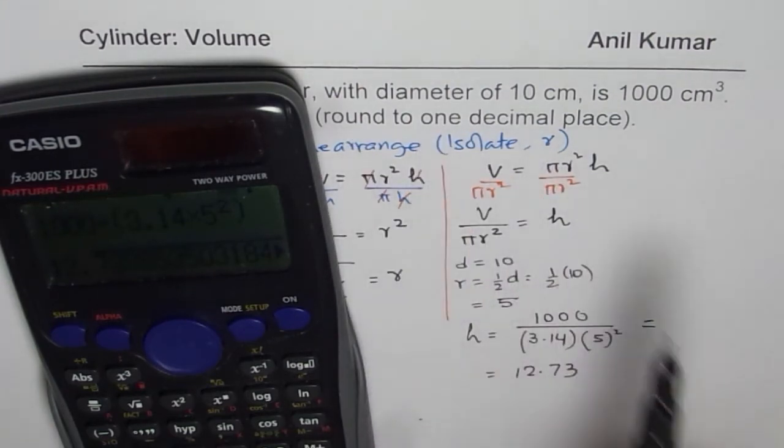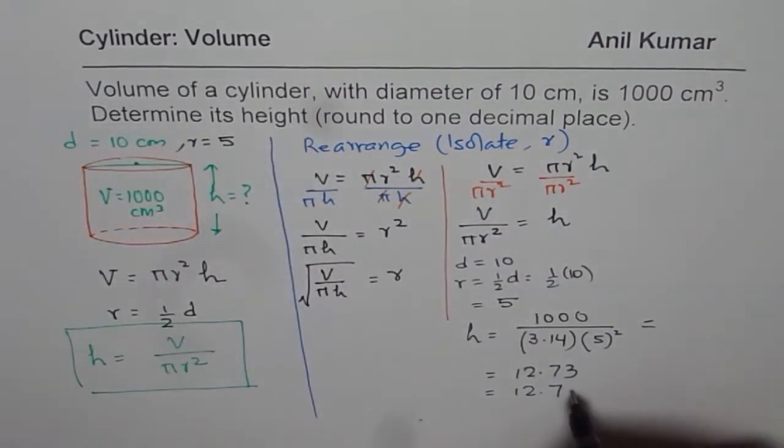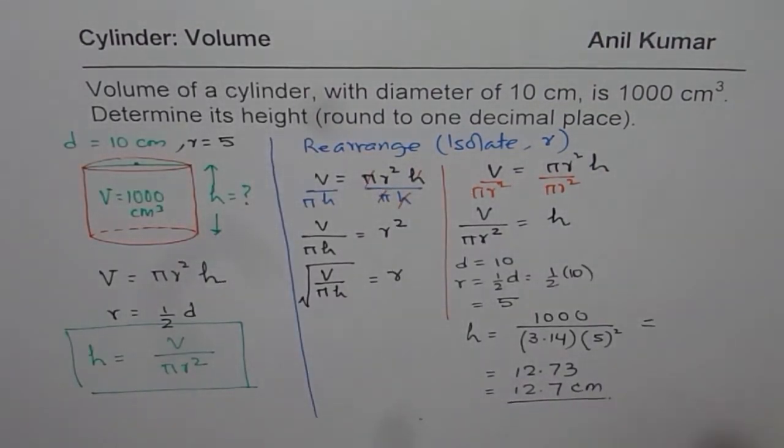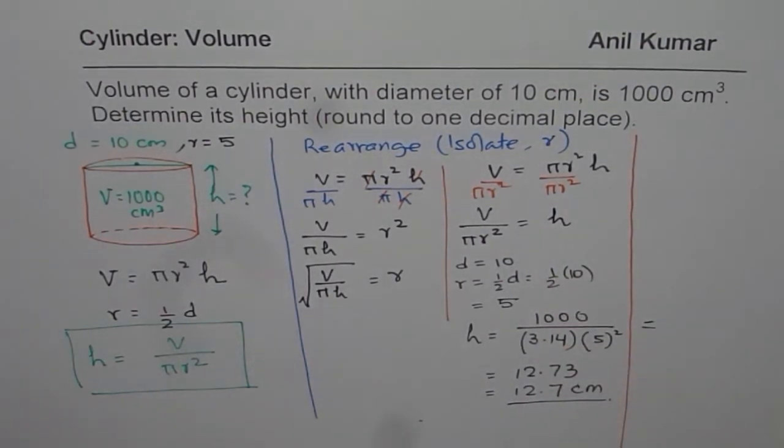Round to one decimal place. That means 12.7, and the units are centimeters. So that is how you can find height by rearranging the formula and then calculating.